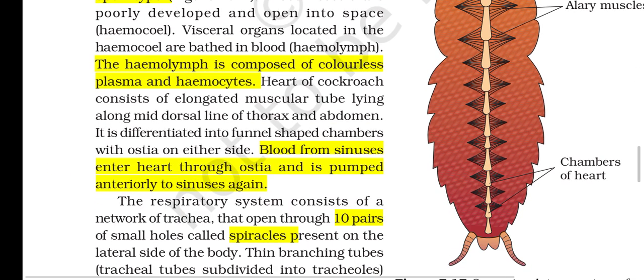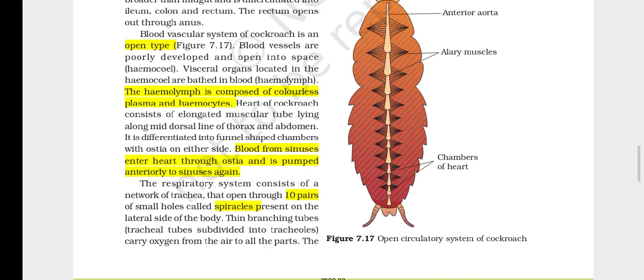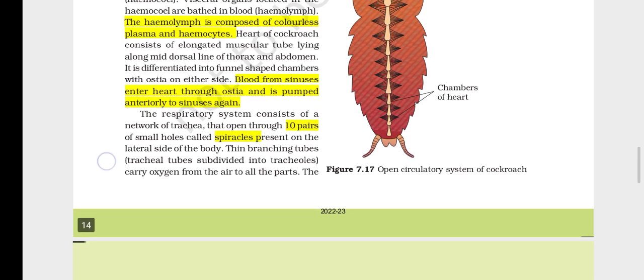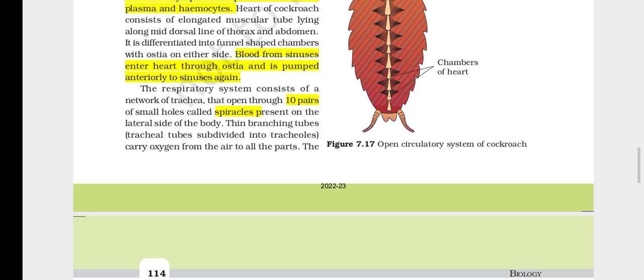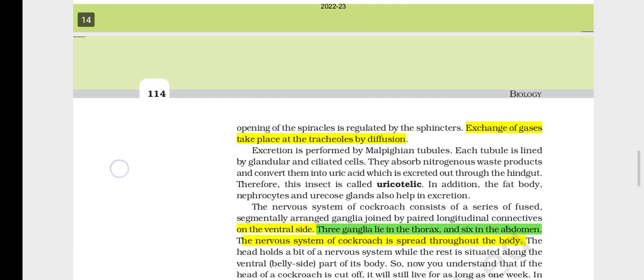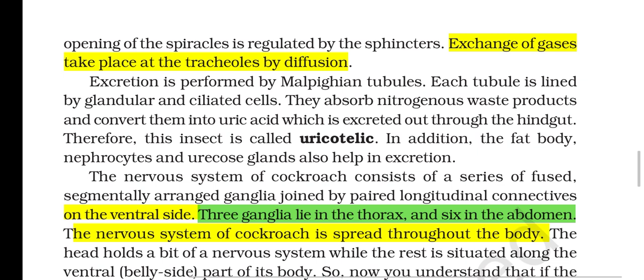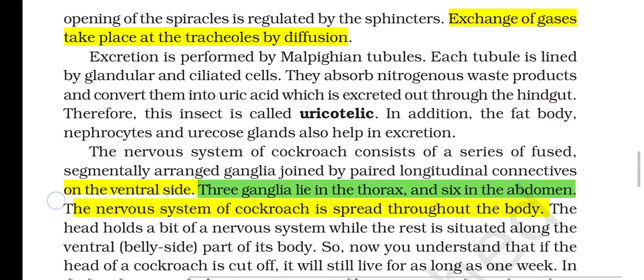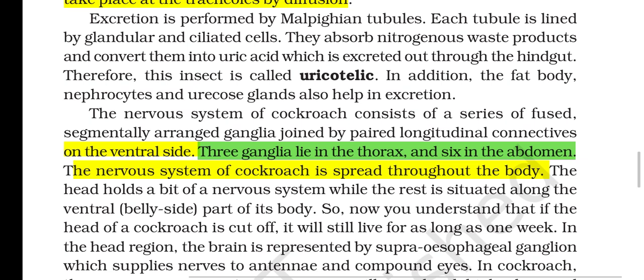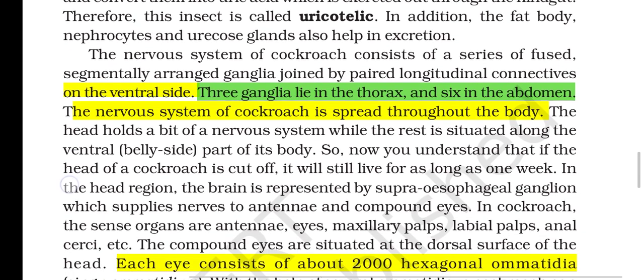Haemolymph is composed of colorless plasma and haemocytes. The heart of cockroach consists of an elongated muscular tube lying along the mid-dorsal line of thorax and abdomen; it is differentiated into funnel-shaped chambers with ostia on either side. Blood from sinuses enters the heart through ostia and is pumped anteriorly to sinuses again. The respiratory system consists of a network of trachea opening through 10 pairs of small holes called spiracles on the lateral sides of the body. Thin branching tracheal tubes subdivide into tracheoles that carry oxygen to all parts; the opening of spiracles is regulated by sphincters, and gaseous exchange takes place at the tracheoles by diffusion. Excretion is performed by Malpighian tubules; each tubule is lined by glandular and ciliated cells that absorb nitrogenous waste products and convert them into uric acid, excreted through the hindgut — making this insect uricotelic. The fat body, nephrocytes and uricose glands also assist in excretion.